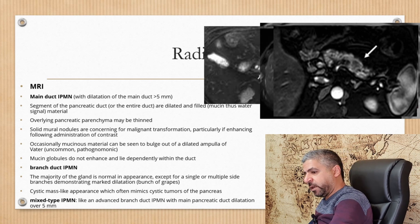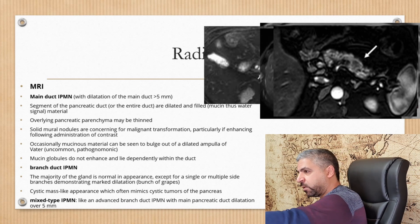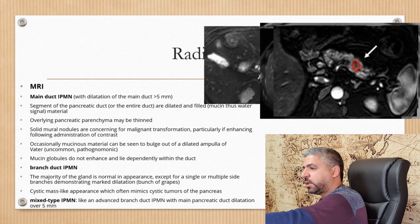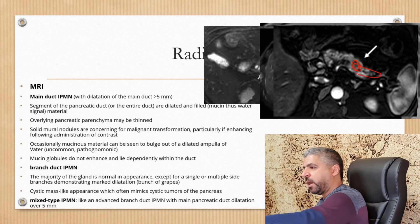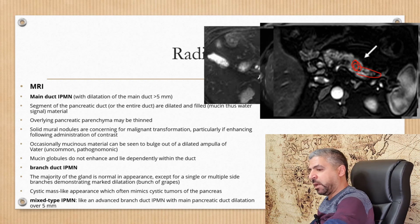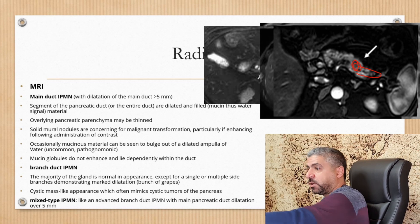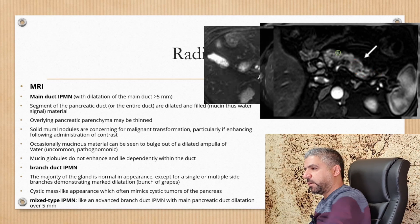On a T1 fat-saturated post-contrast image, you can see the cystic lesion with thinning of some areas of the pancreas — it is non-enhancing.